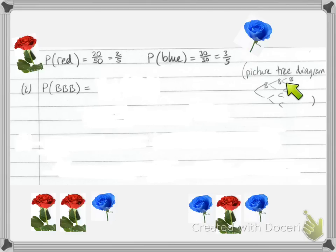What we should do is picture the tree diagram. The first flower that we choose could be blue or red. And we can work out the probability of getting each type. And for a blue flower that will be 30 out of 50.